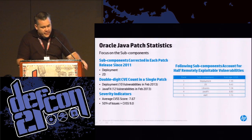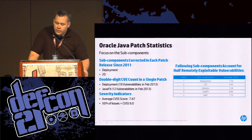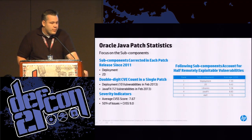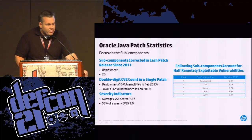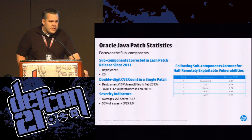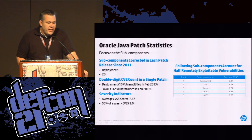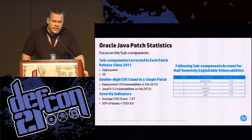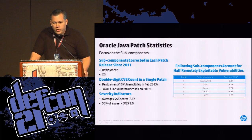If we take a look at the information available from the patches, we can start to determine the component rankings for the most vulnerable components in the architecture. The five components on the screen are actually responsible for half of the remotely exploitable vulnerabilities in Java for 2011 through 2013: deployment being number one, 2D being number two, followed by libraries, JavaFX, and AWT. But the 2D component is producing vulnerabilities with a CVSS score of 9.43 on average, so you could argue it's actually the worst component in the architecture. Both deployment and 2D have been patched in every single patch release over the last two and a half years.